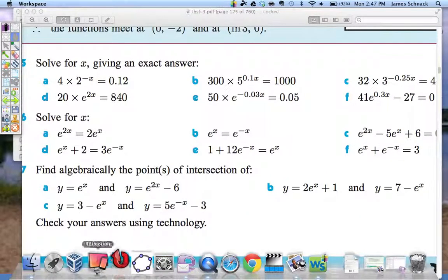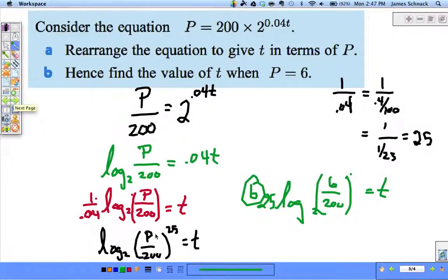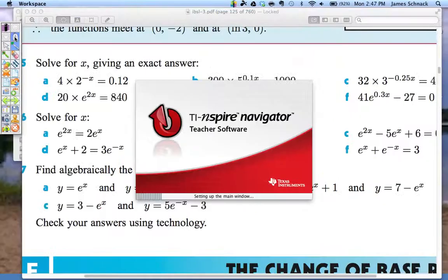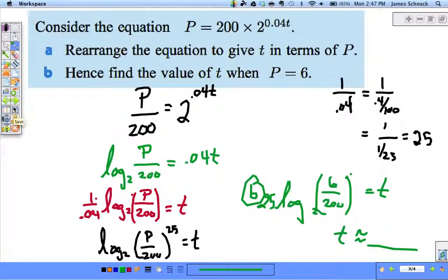Really, this is plug and chug. Twenty-five times log base 2 of 6/200, push enter, and we've got t. Please know that it will be an approximation—t is approximately some value. Let's go to the next problem.